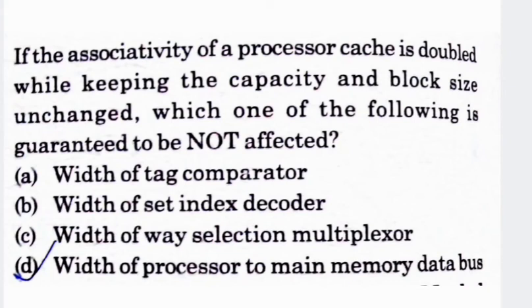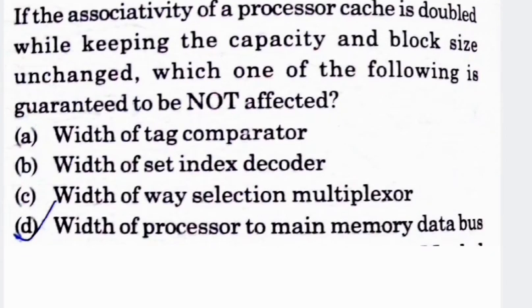Next question: if the associativity of a processor cache is doubled while keeping the capacity and block size unchanged, which of the following is guaranteed to be not affected? Option A: width of the tag comparator, option B: width of the offset/index decoder, option C: width of the set-selection multiplexer, option D: width of the processor to main memory data bus. Option D is correct — the data bus width between processor and main memory remains constant regardless of cache associativity changes.